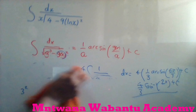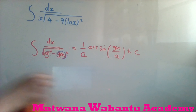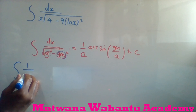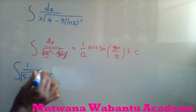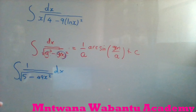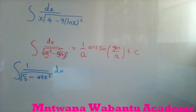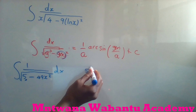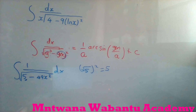Now they give you something tricky — for example, the integral of 1 over the square root of 5 minus 49x², dx. When you look carefully, 49 is 7² and x² is fine, but the problem is the 5. Five is not a perfect square — we need it to be written as a square to match our formula.